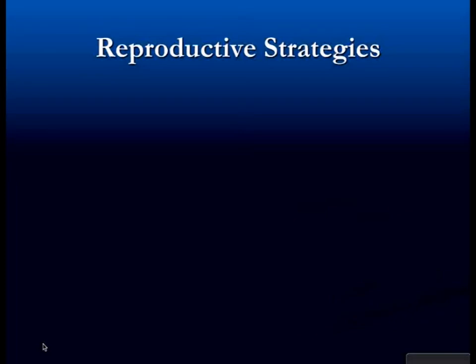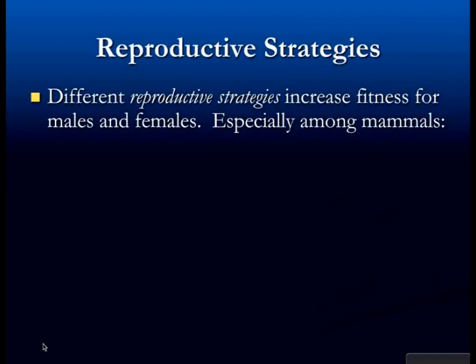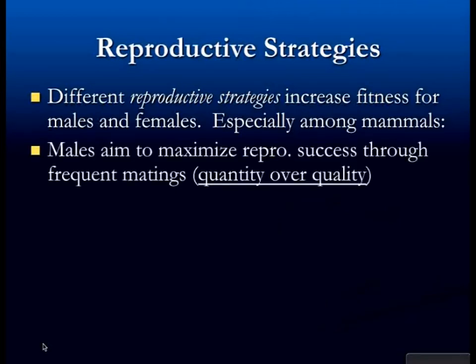The difference is that males are looking for quantity over quality, and females are looking for quality over quantity and therefore are choosier. If the tails hinder survival because they use more resources and make them obvious to predators, wouldn't that be an evolutionary disadvantage? Totally, and it's a trade-off. What keeps bird tails and bright feathers from just getting bigger and bigger forever is that there is a disadvantage.